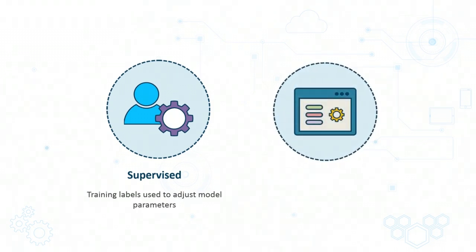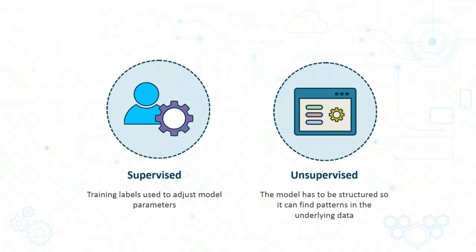Moving along to unsupervised learning, this is a situation where you do not have any training labels to work with. The task of the unsupervised learning algorithm is to structure the model in such a way so that some patterns can be gleaned from the underlying data. Once such patterns have been obtained, it is up to the user to decide how exactly to act upon them.